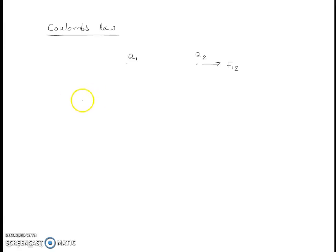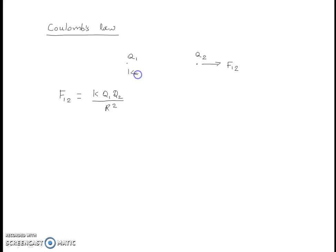Coulomb's Law gives the expression for the force between two charged bodies which are at rest. According to Coulomb's Law, the force exerted by point charge Q1 on point charge Q2 is given by K times Q1 Q2 divided by R squared, where R is the distance between the two charges, Q1 and Q2 are the charges, and K is the proportionality constant. In SI units, K is given by 1 divided by 4 pi epsilon naught.